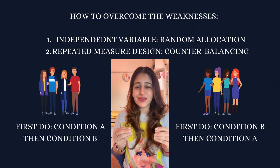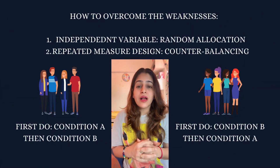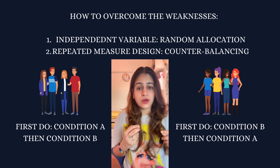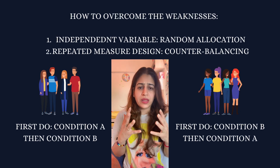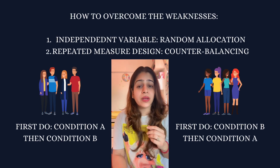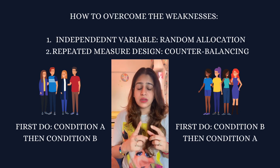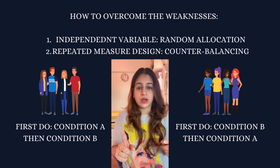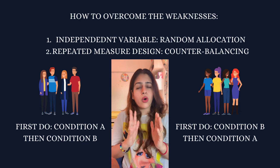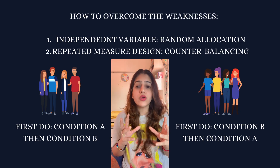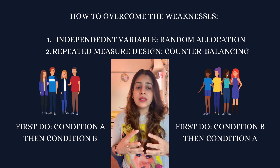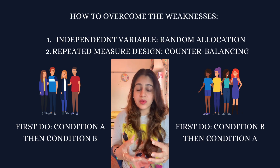Now, the second point is a little bit confusing, so listen carefully. How do we overcome the repeated measure design weakness — that is, order effects? Order effects are always going to be there, either fatigue or practice, because one participant is participating in both conditions, condition A and condition B. So how do we control this, so that whatever they do in A doesn't carry forward to B?